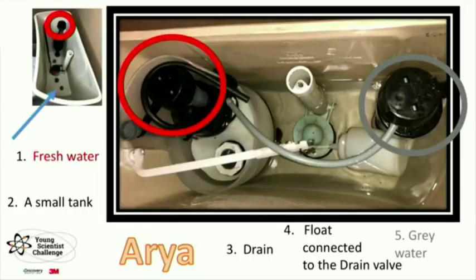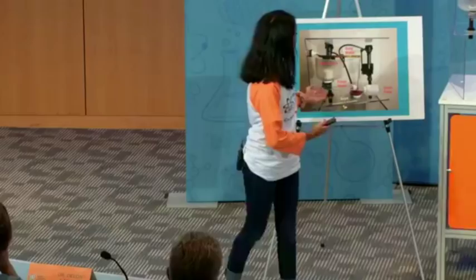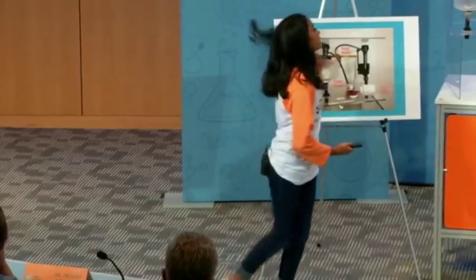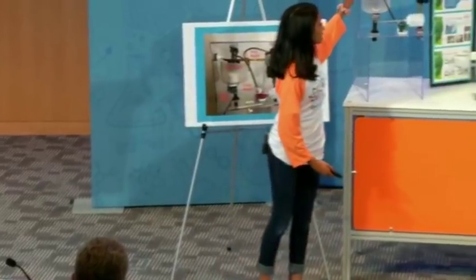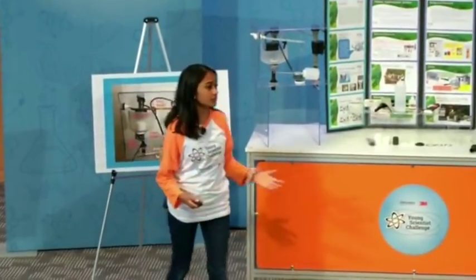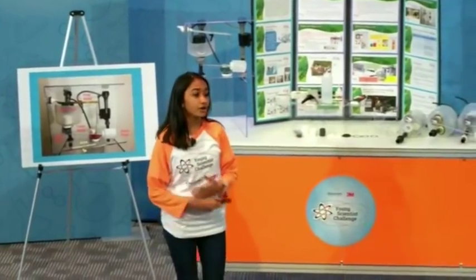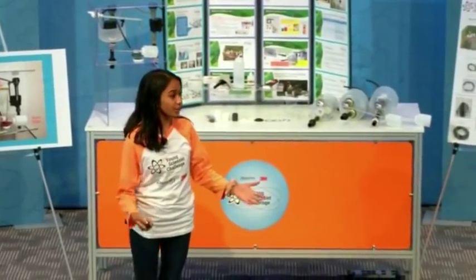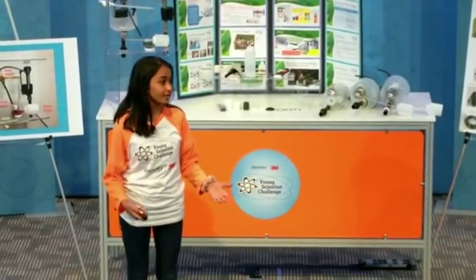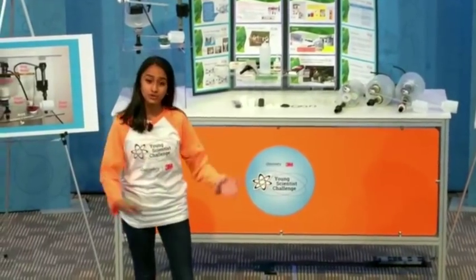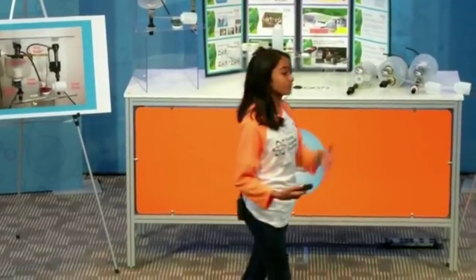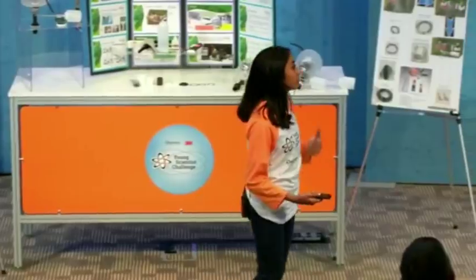I drilled a second opening in the toilet tank to install a gray water fill valve, similar to the fresh water fill valve. In addition, Aria has a small tank around the fresh water float, as well as a drain valve and a float. This float opens and closes the drain valve. I do not have a gray water storage system in my house, but there are many commercial products available in the market. To focus on the development of a new toilet flushing system, I simulated the gray water by using fresh water from a faucet in my bathroom.